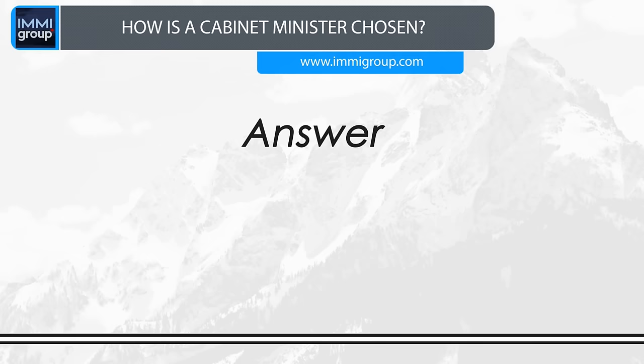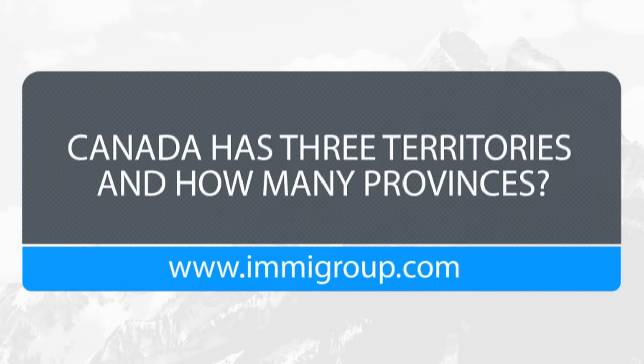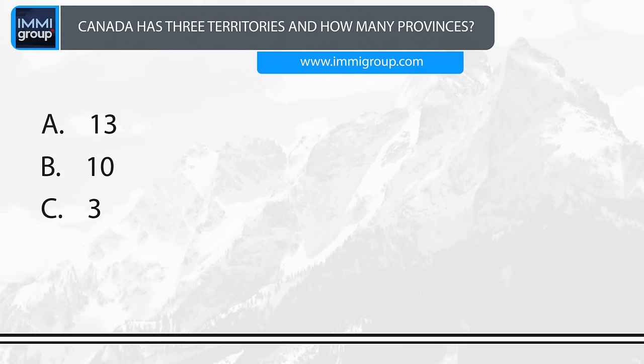Canada has three territories. How many provinces? A. 13. B. 10. C. 3. D. 5. Answer: 10.